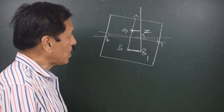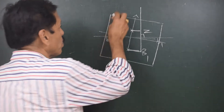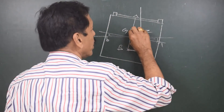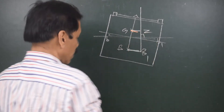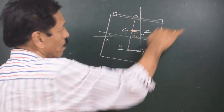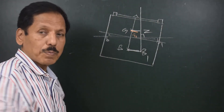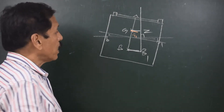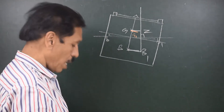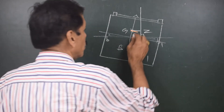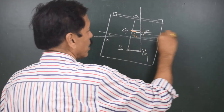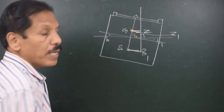Now what happens when I shift a weight transversely? Suppose there is a weight on the deck which is shifted transversely — G will shift to a new position G1, and GG1 is parallel to the shift on the deck. So GG1, the shift of the ship's center of gravity, is parallel to the deck shift. The new righting lever therefore would be G1Z1.